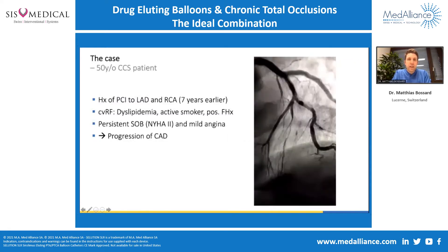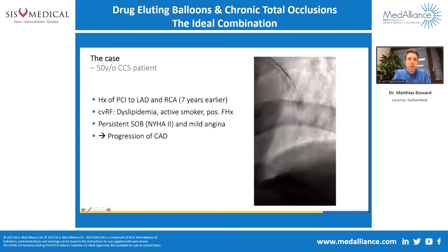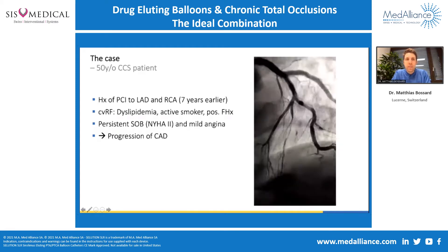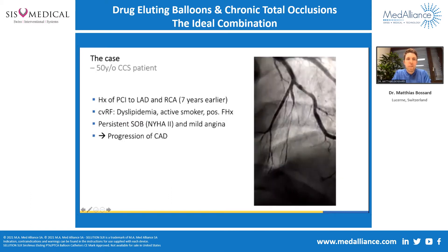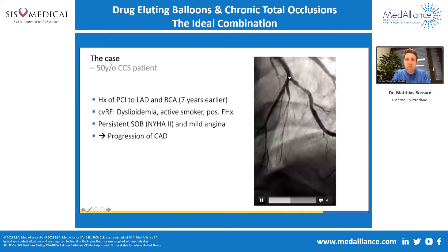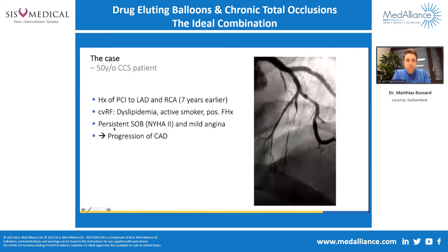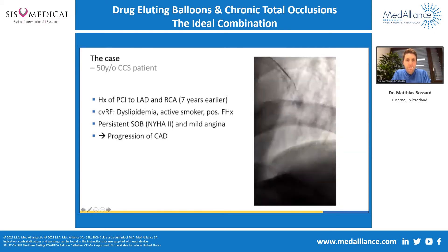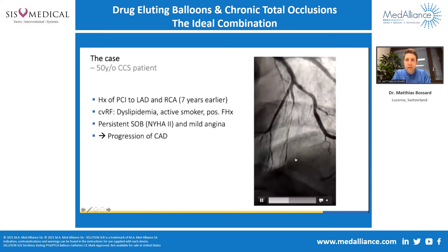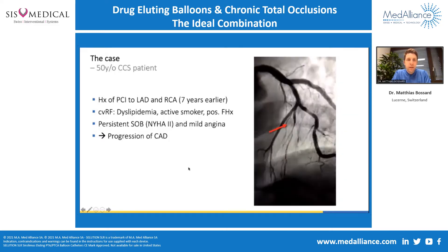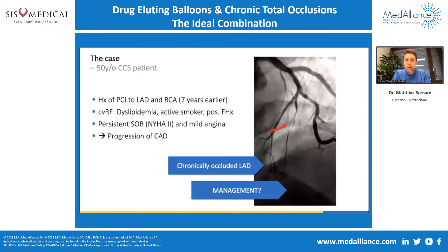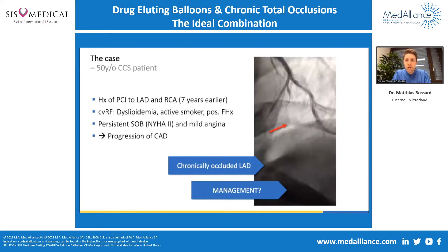I'd like to start with a brief case vignette. It's a 50-year-old gentleman who has a history of chronic coronary syndrome, who has actually been treated by Florian. He had a history of PCI to the LAD and RCA seven years earlier. He had a stent in the proximal LAD which wasn't too bad at that time, and he presented to our site with progressive shortness of breath and some mild angina. On the angiogram, we figured out that he now had an occluded mid-LAD, and the question comes up how would you manage that.